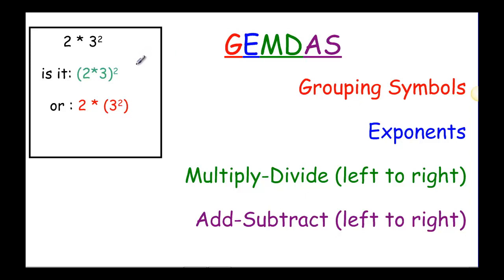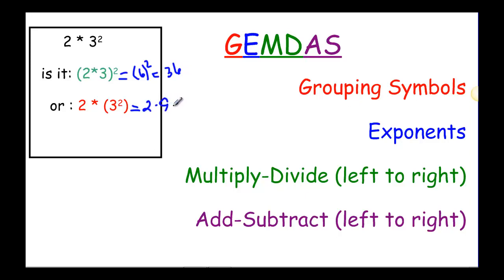So why do we have order of operations? Well, if you look at this example — 2 times 3 squared — there are several ways you could do it. You could think of that as 2 times 3 and then square it, giving you 6 squared, which is 36. Or you could do 2 times 3 squared, which is 9, and 2 times 9 would be 18. Totally different answer. So we need an order of operations so that everybody does the same thing in the same order and we all get the same answer.